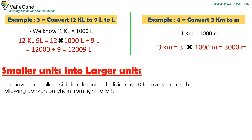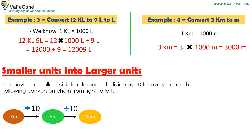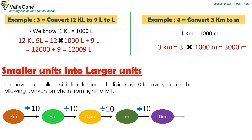Smaller units into larger units. To convert a smaller unit into a larger unit, divide by 10 for every step. Kilometer is divided by 10 to get hectometer, hectometer is divided by 10 to get decameter, decameter is divided by 10 to get meter, meter is divided by 10 to get decimeter, decimeter is divided by 10 to get centimeter, centimeter is divided by 10 to get millimeter.